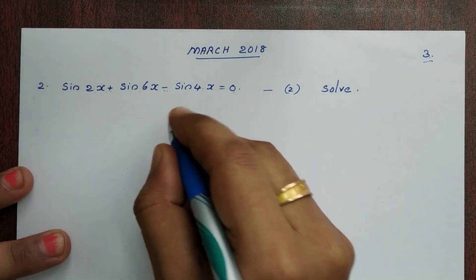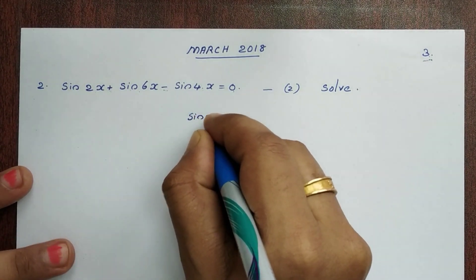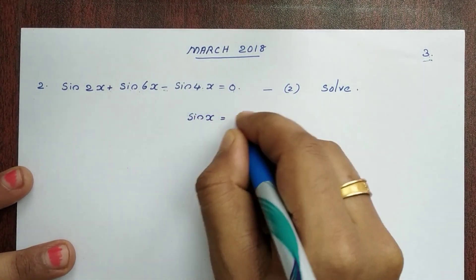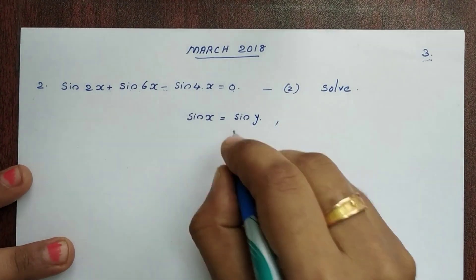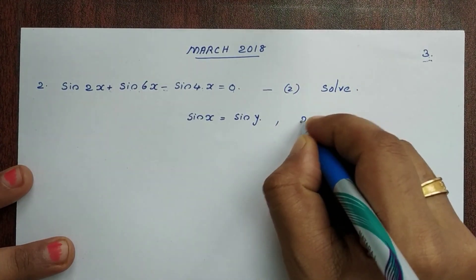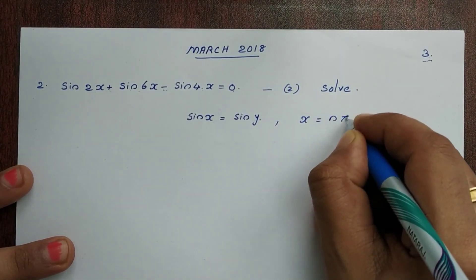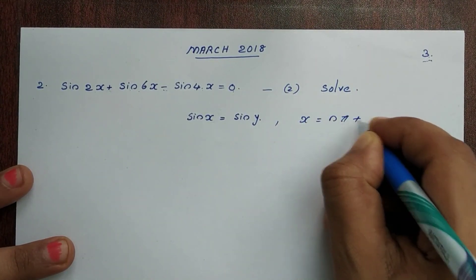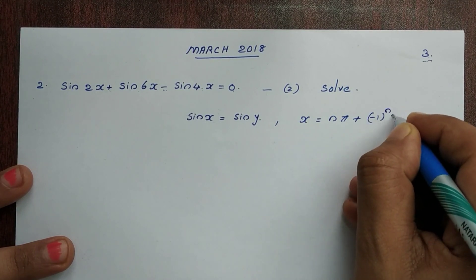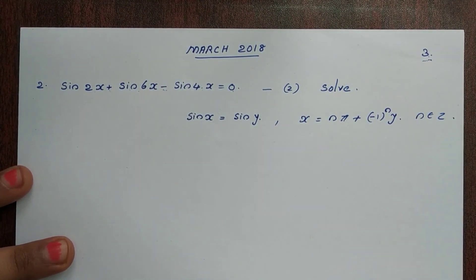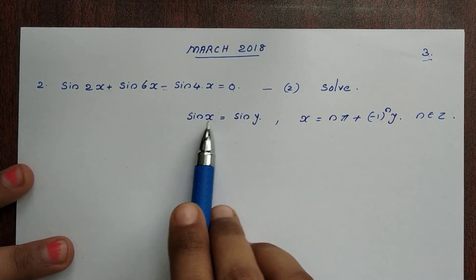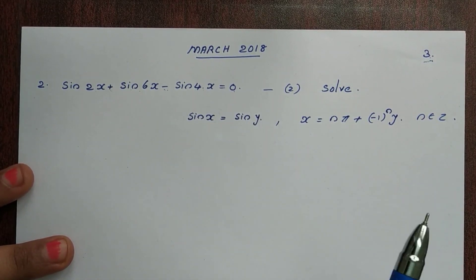We need to recall that if sinx equals siny, then x is equal to nπ ± (−1)^n · y, where n belongs to Z. This is the general solution formula for sinx = siny.